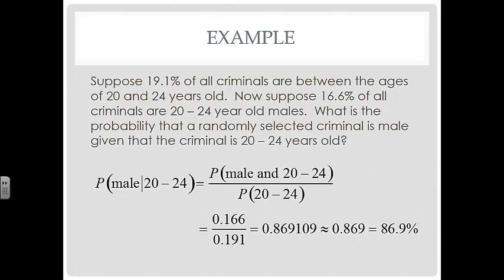So there's an 86.9% chance that a randomly selected criminal is male, given that we're selecting criminals out of all the 20 to 24 year old criminals. So our population in this case is the criminals that are 20 to 24 years old, and we're randomly selecting one of those criminals. There's an 86.9% chance that they are male, not female.